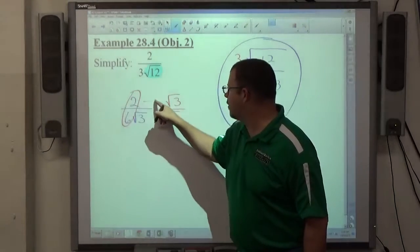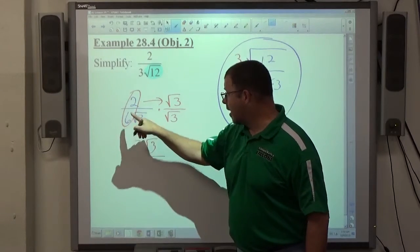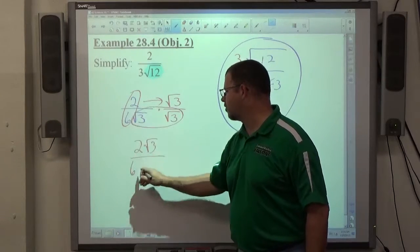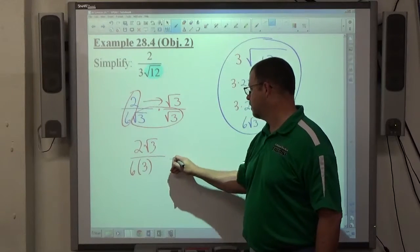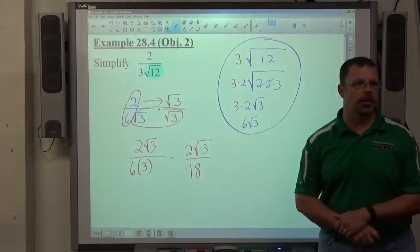So, on top I've got 2 times the square root of 3, which just makes 2 times the square root of 3. On the bottom, I've got 6 being multiplied by the square root of 3 times the square root of 3, which is 3. That just gets me to 2 times the square root of 3 over 18.